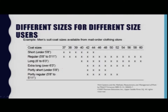For example, men's suit coat sizes available in a mail-order clothing store include short, regular, long, extra long, portly short, and portly regular. A table illustrating these sizes shows you can easily imagine the inventory challenges in the garment industry — finding the right balance between satisfying customer needs and keeping production and inventory costs in check.